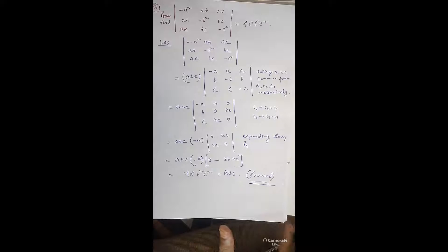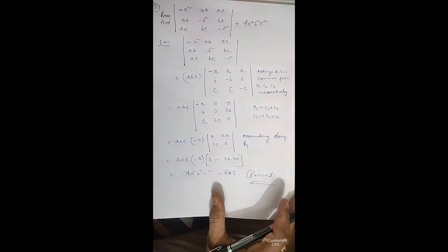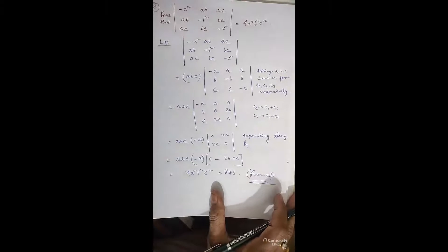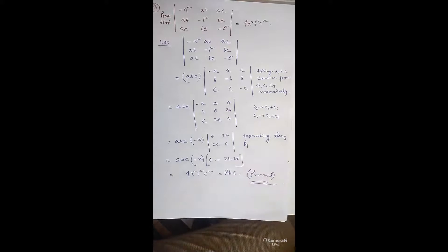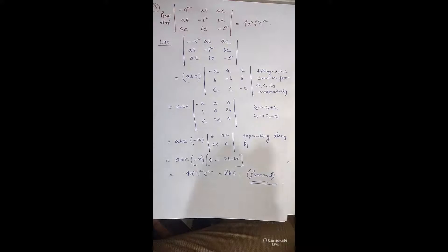In each and every problem, first check whether we can factor anything out. Then our target is to make the maximum number of zeros, either in any row or in any column. Next problem, question number 4 — also very important.